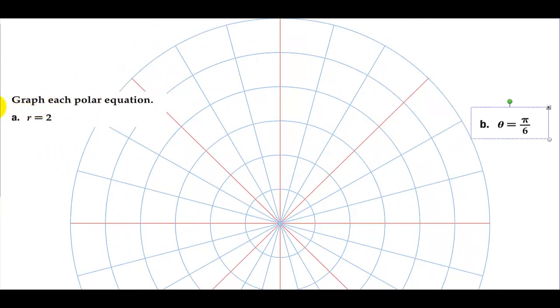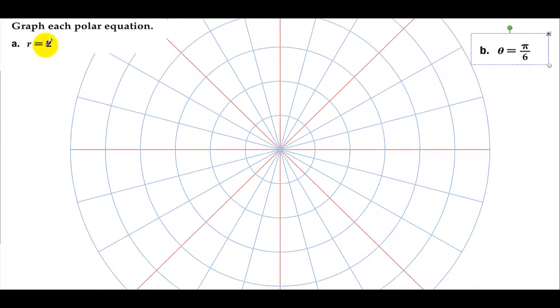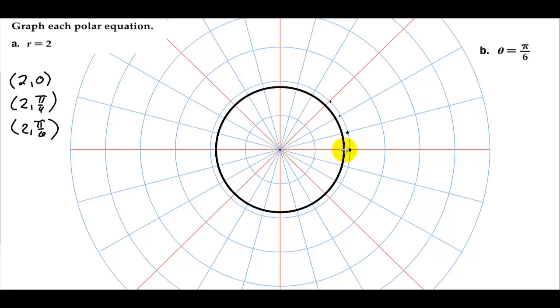Graph each polar equation. This says the radius must be 2, so we could have a radius of 2 at any angle - at 0, at π/4, at π/6. We could go to 2 and have all of the points that are in this circle with a radius of 2. So to graph r=2, it's just a circle with a radius of 2.